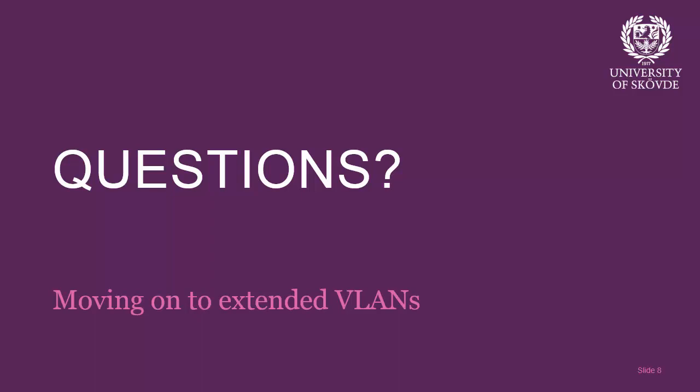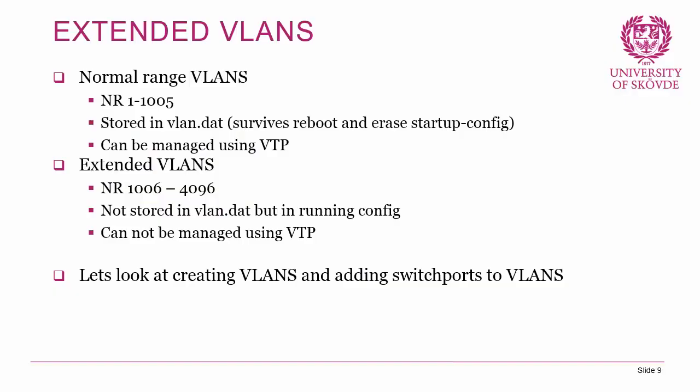Moving on to extended VLANs: normal range VLANs run from VLAN number 1 to 1005, stored in vlan.dat in flash memory — they survive a reboot and erasing startup config, and can be managed using VTP. When you need more VLANs, you resort to extended VLANs: numbers 1006 to 4096. These are not stored in vlan.dat but in running config or startup config, and can be erased by erasing startup/running config. They cannot be managed using VTP, so if you plan on using VTP in your domain, you cannot use it to configure extended VLANs.